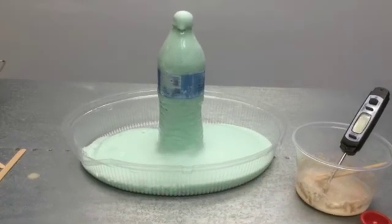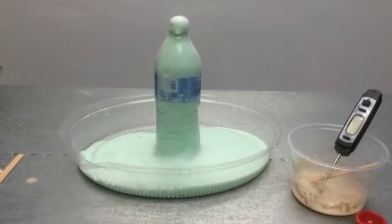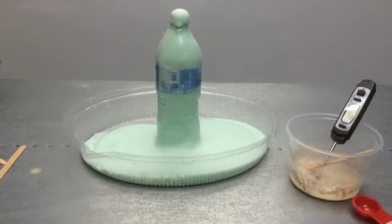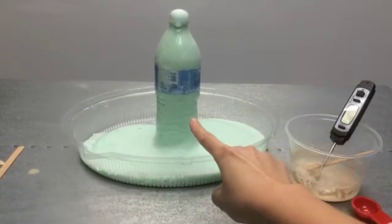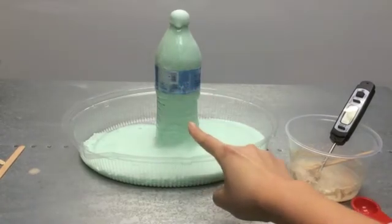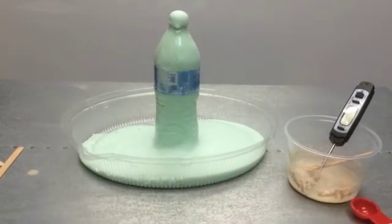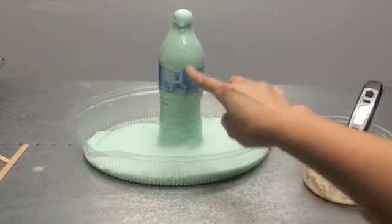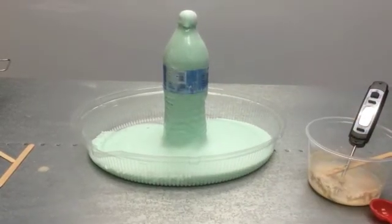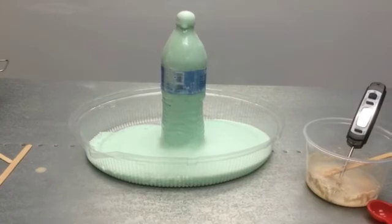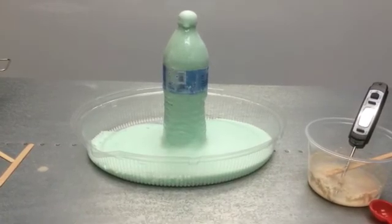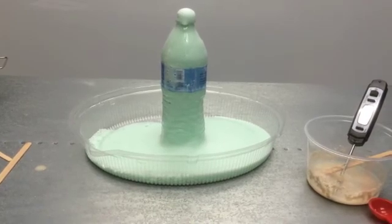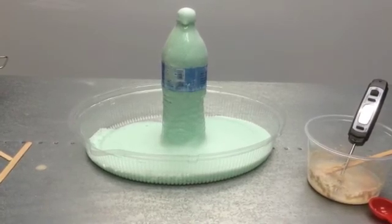And you really want them to think about all the factors that changed between the first activity and the second one, and there were a lot. So we put soap in here. How did soap lead to the foam? We also didn't use an open bowl. We used a bottle with a narrow neck. How could that have affected what happened? We also mixed the yeast with warm water before we put it into the hydrogen peroxide. And then we also used more hydrogen peroxide. So a lot of things changed.